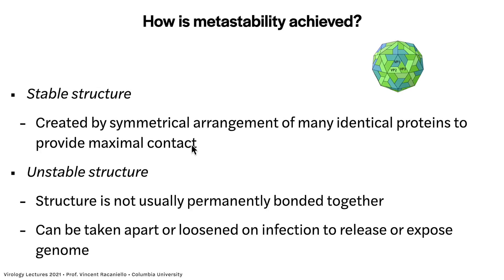Here is an example of a virus particle built of repeating subunits of three proteins — VP1, VP2, and VP3. The symmetrical arrangement gives lots of contact between proteins and stability. The unstable part comes because the protein subunits are not covalently bound, so they can be loosened to release or expose the genomes. In many viruses the genome stays in the particle and polymerization occurs there, but the particle must be loosened to allow access.